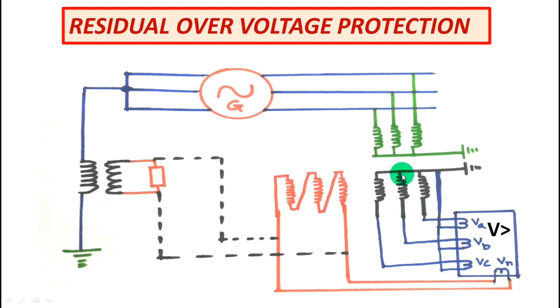If this connection is made, you have to be careful that this PT should be either 3 single phase PT unit or a 5 limb PT. Because only using this PT, these two PTs, the 0 sequence flux will be residual flux will be flowed. Otherwise if you use a 3 limb PT, there the residual flux will not be available.